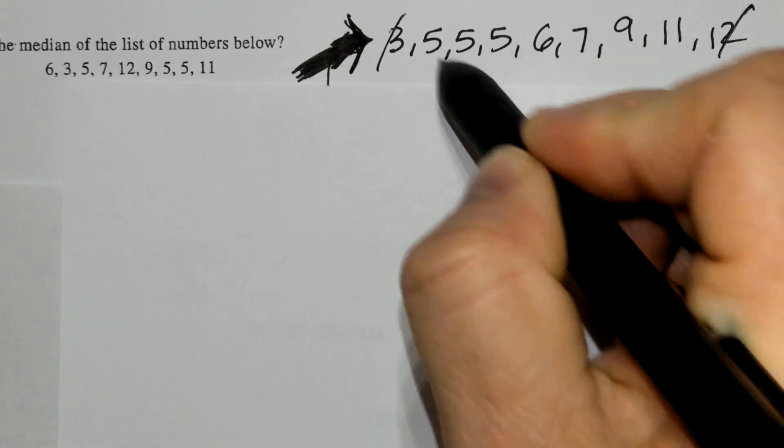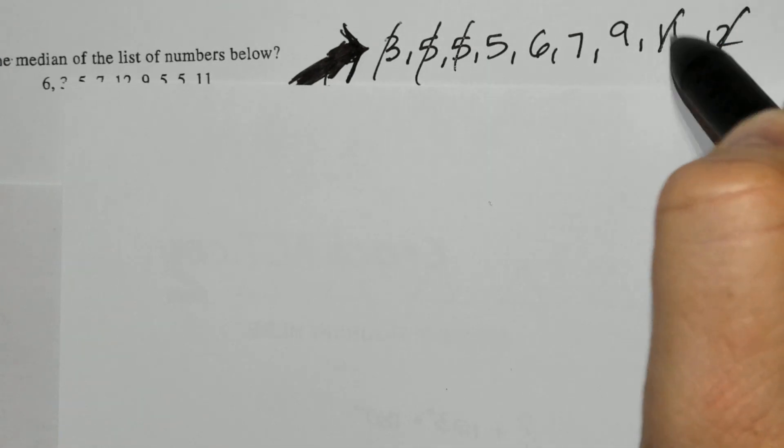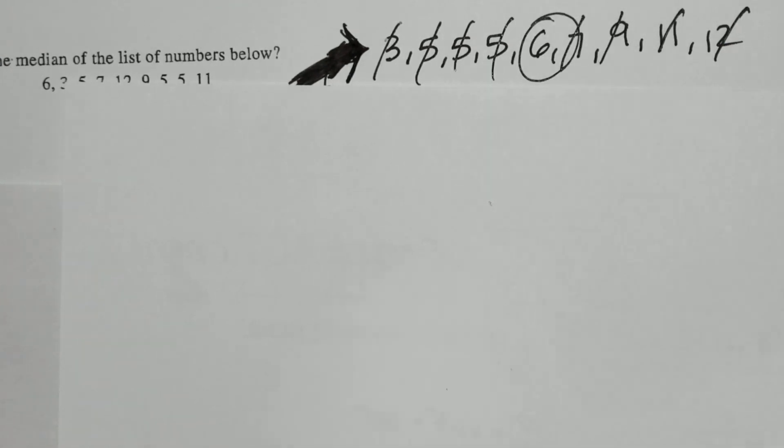I choose to go low, high, low, high, low, high, until I end up with one number in the middle, happens to be six.